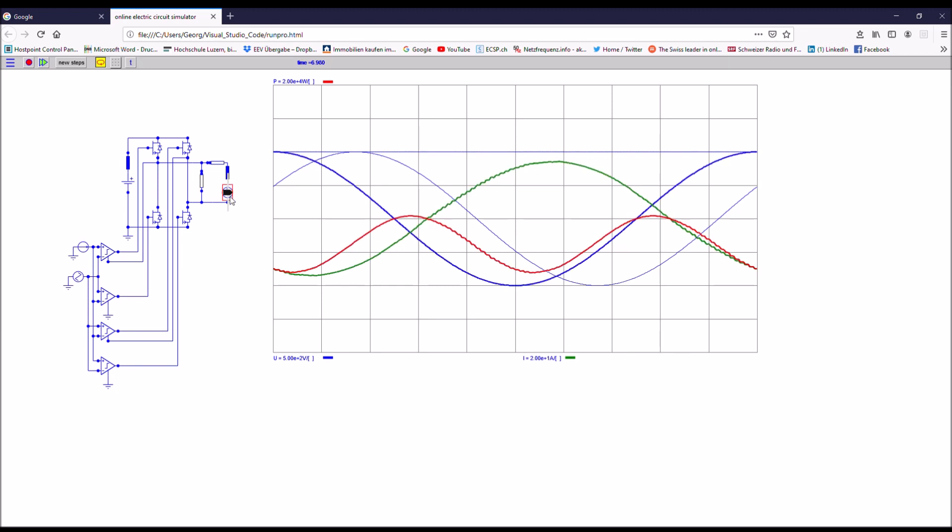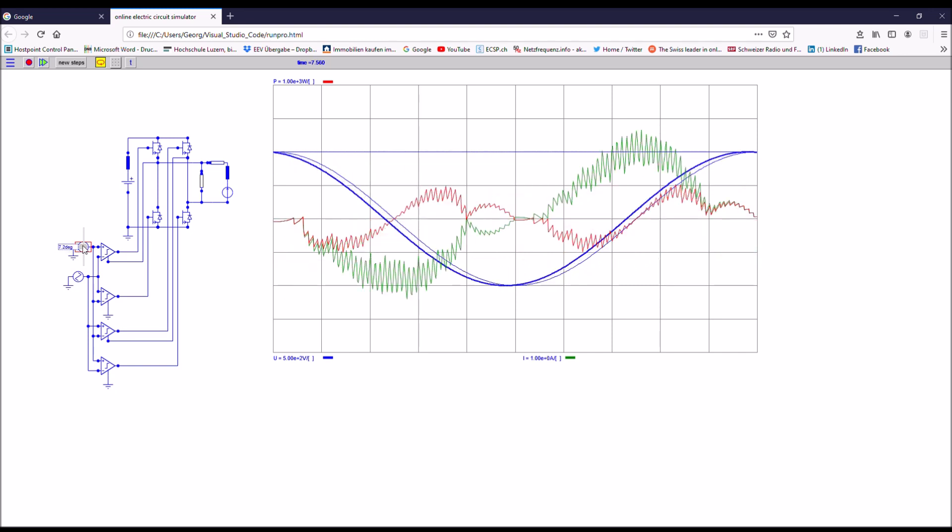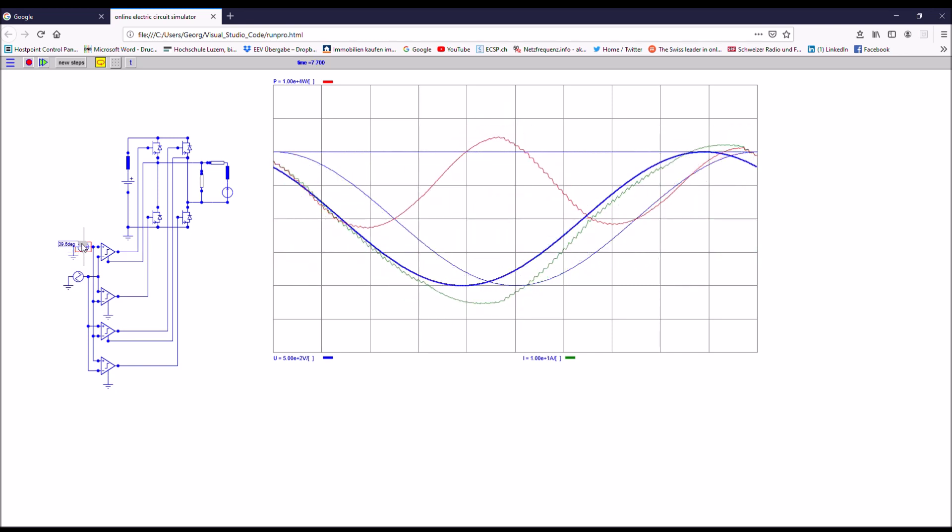And vice versa, if I go the other way, I have a leading control signal. You can see that the power is shifted to the positive area of the curve. That means that the power is now fed from the grid back to the battery.